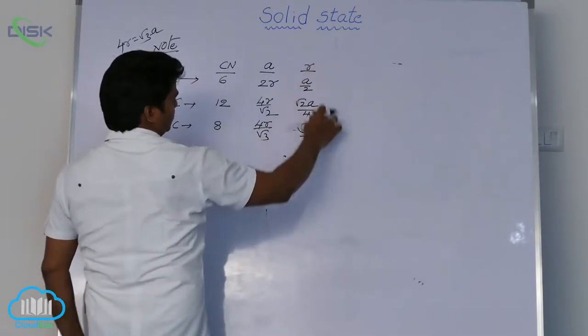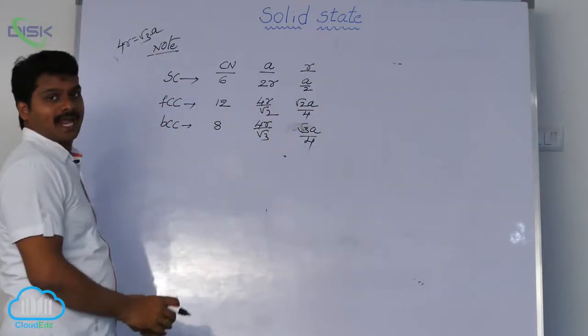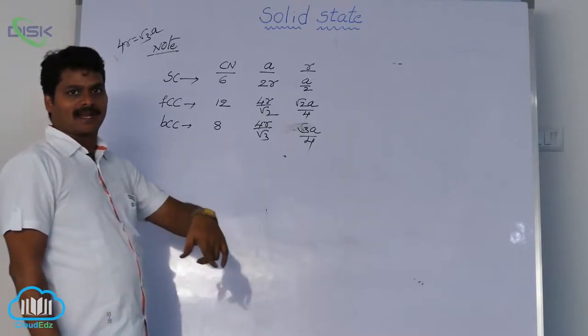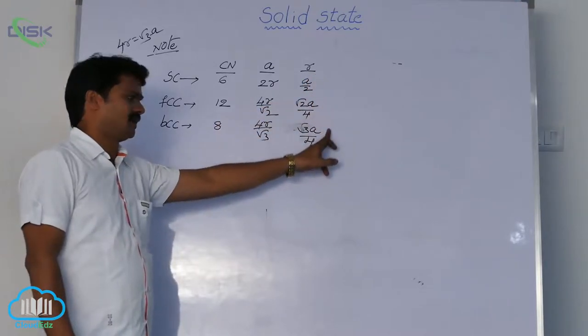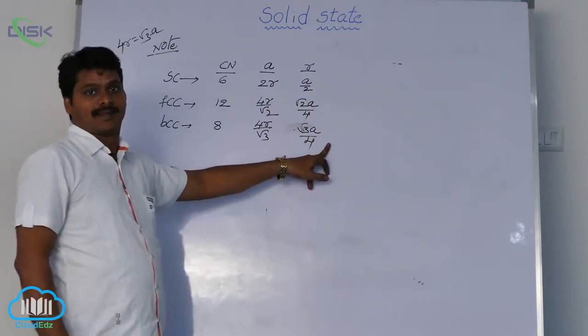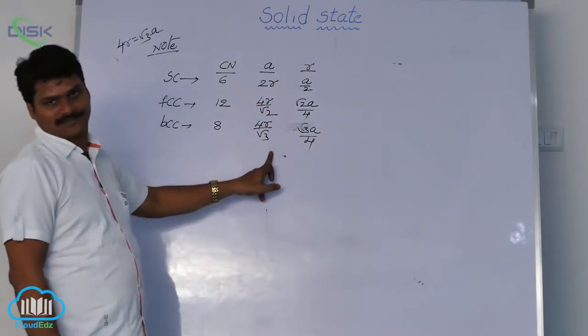So these are the formulas to calculate radius. If edge length is provided in the question, then calculate radius of atom using these formulas. If radius is provided in the question, calculate edge length using these formulas.